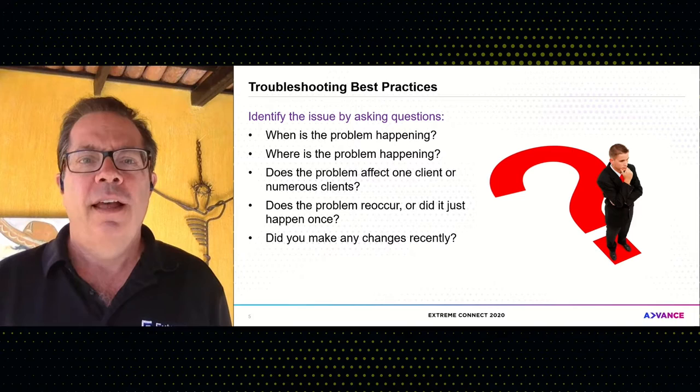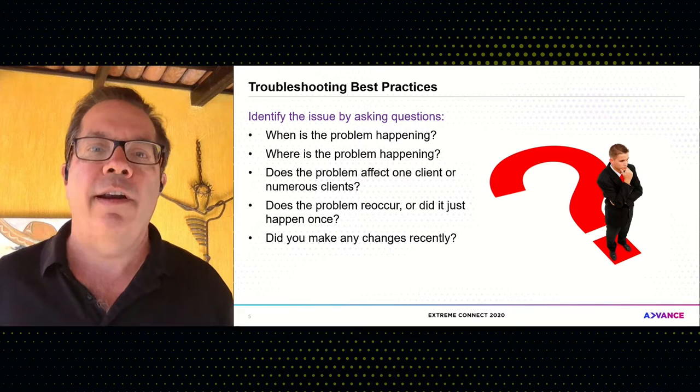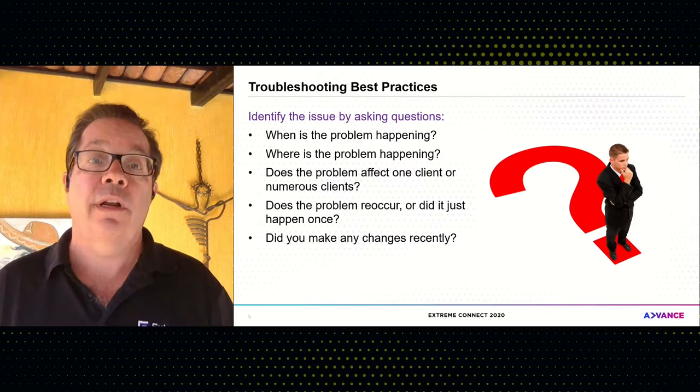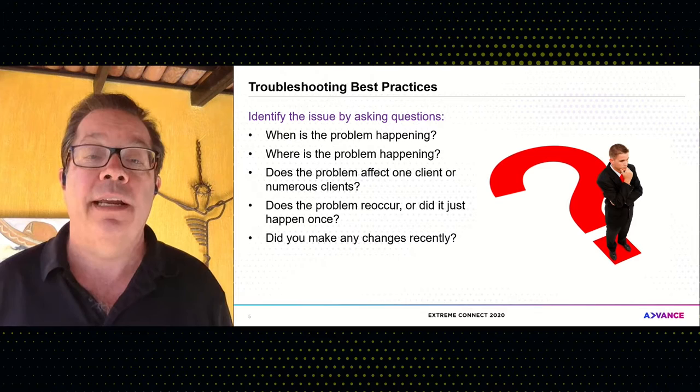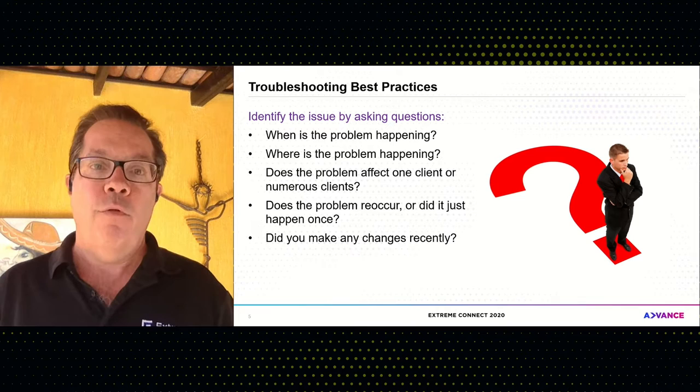Troubleshooting best practices — a lot of these things are 101, but sometimes you have to remind people. A lot of times we get calls to GTAC or support and someone just says the Wi-Fi doesn't work, but there's not enough information. By asking questions, you can help yourself and others troubleshoot your network. Simple questions like: when is the problem happening? Is it at a particular time of day, or only at noon?